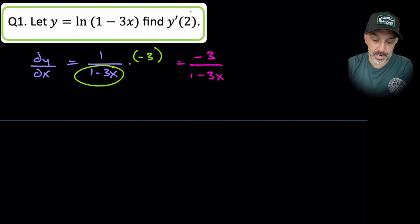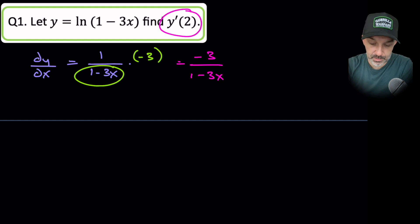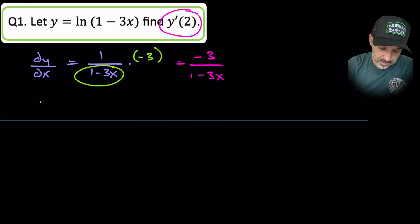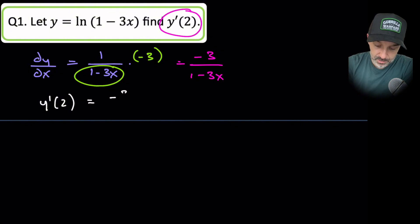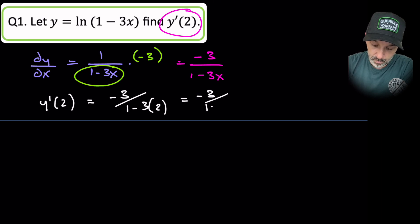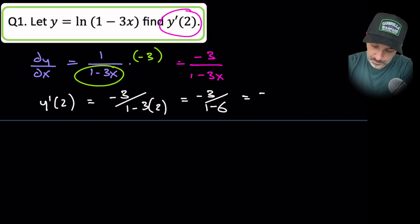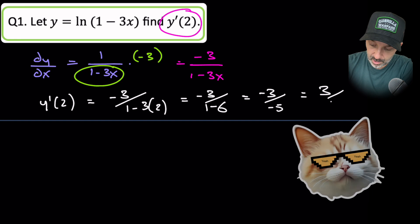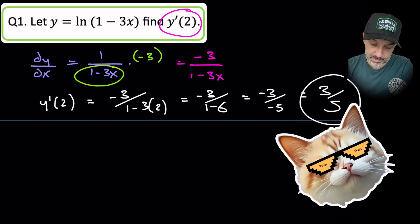We need to find the gradient at 2, so we substitute x equals 2 into the derivative. y prime of 2 gives minus 3 over (1 minus 3 times 2), which is minus 3 over (1 minus 6), so minus 3 over minus 5, which simplifies to 3 over 5. That completes question 1.